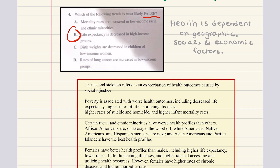To further prove why four is B: low income racial and ethnic minorities have higher mortality rates than high income groups — A is true. Birth weights are decreased in children of low income women — also true. Low income women do tend to have children with lower birth weights, which usually leads to problems further down the line. Rates of lung cancer are increased among low income groups — also true. So the correct answer for four is B.